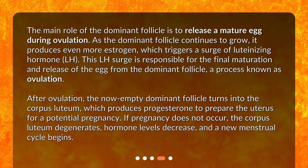After ovulation, the now-empty dominant follicle turns into the corpus luteum, which produces progesterone to prepare the uterus for a potential pregnancy. If pregnancy does not occur, the corpus luteum degenerates, hormone levels decrease, and a new menstrual cycle begins.